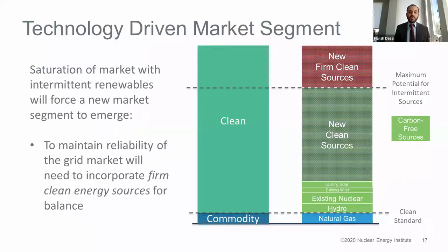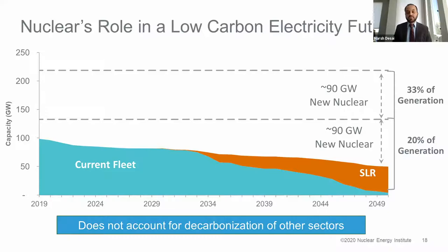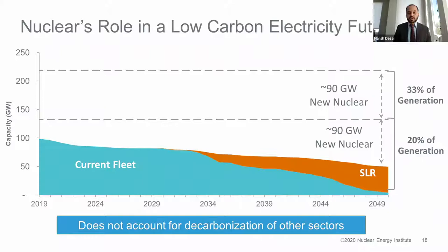If you take EIA's projections and look at maintaining nuclear's current 20% share of electricity generation through 2050, that would require about 90 gigawatts of new nuclear on the grid. If it's 33% of electricity generation, that's another 90 gigawatts of nuclear capacity needed. And again, these don't account for other sectors decarbonizing.